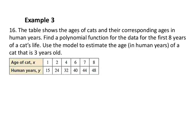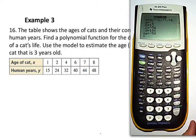Example 3. The table shows the ages of cats and their corresponding ages in human years. So if the age of a cat is two years old, then in terms of the cat, that would be a 24-year-old in cat years. So the age of the cat's equivalent in human years. Find a polynomial function for the data for the first eight years, and then use this model to estimate a cat that is three years old. Now if we take a look at our x values that go from 1 to 2 to 4 to 6 to 7 to 8, they're not equally spaced. We're missing some values. So we can't use finite differences.